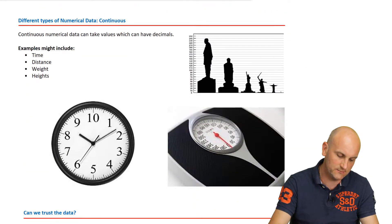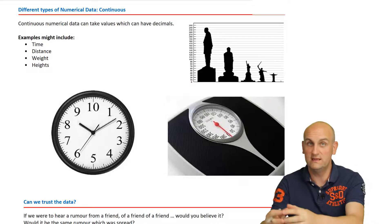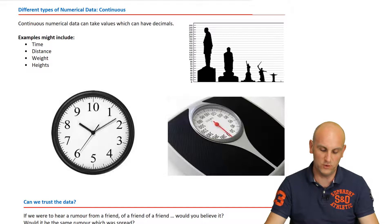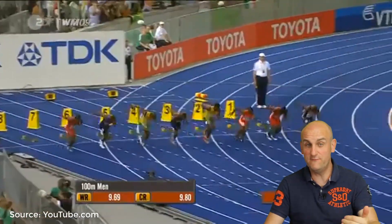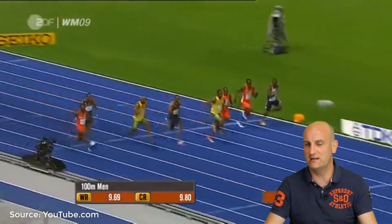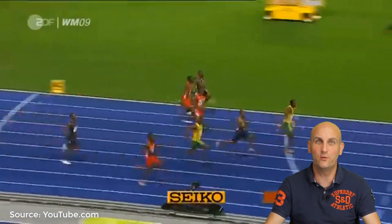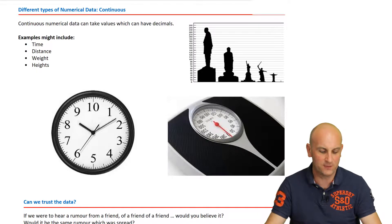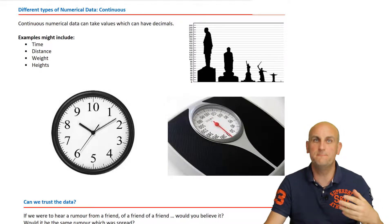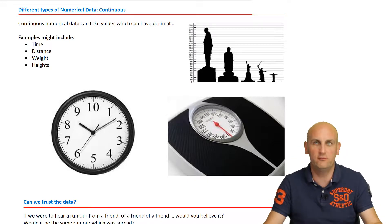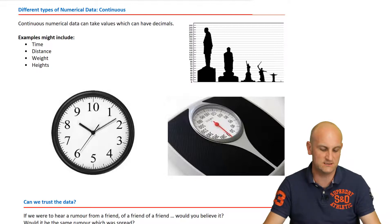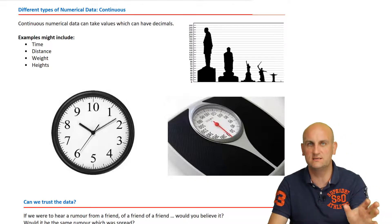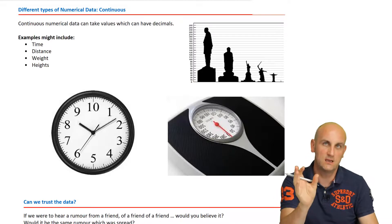What about continuous data? There are times where we can actually measure things with decimals. Examples include time — think about Usain Bolt. We didn't say he ran in nine seconds because he actually ran in 9.58 seconds. What about distance, weight, and height? Can these all be measured to decimals? Yes — I could be 187.3642791 centimetres, or 100.4 kilos. So we need to know whether our data is discrete (whole number) or continuous (can be measured using decimals).